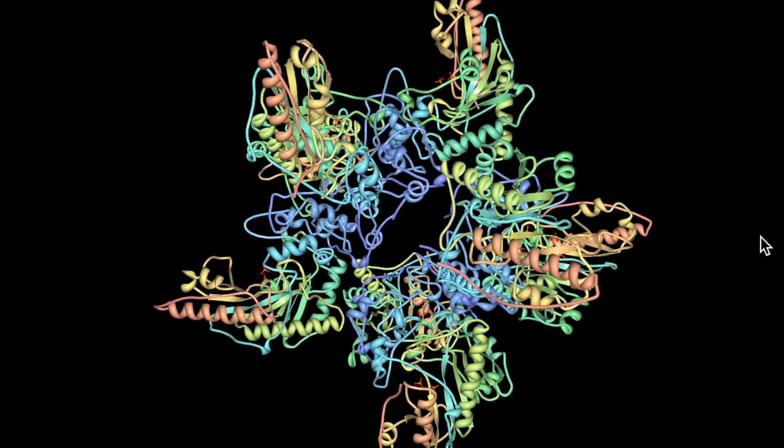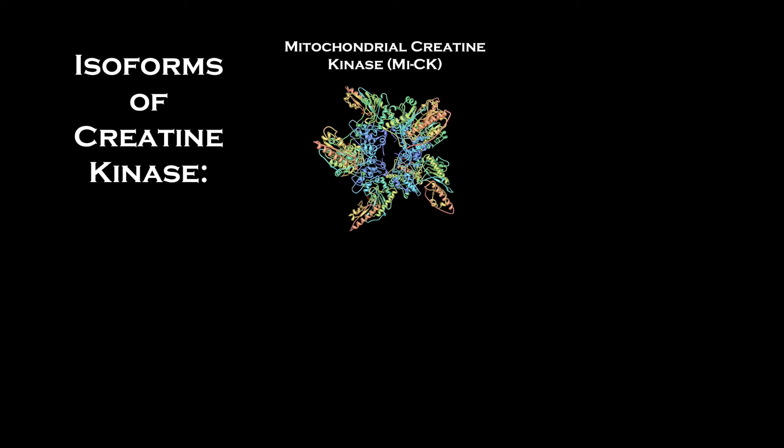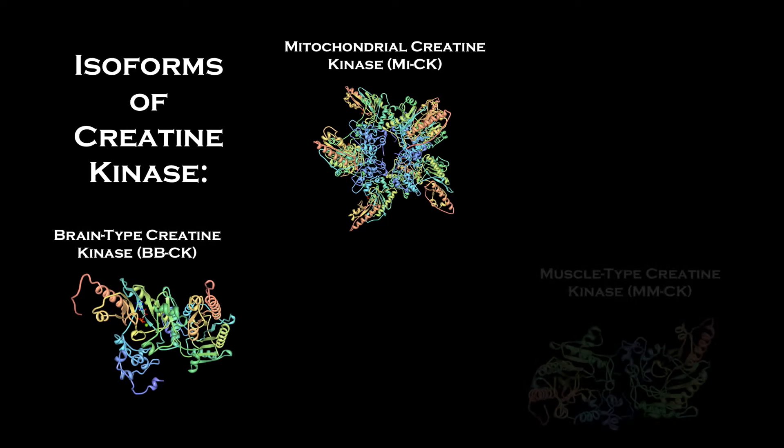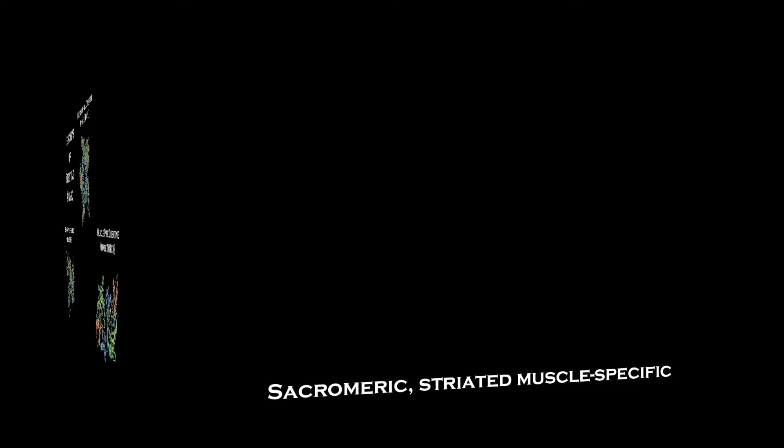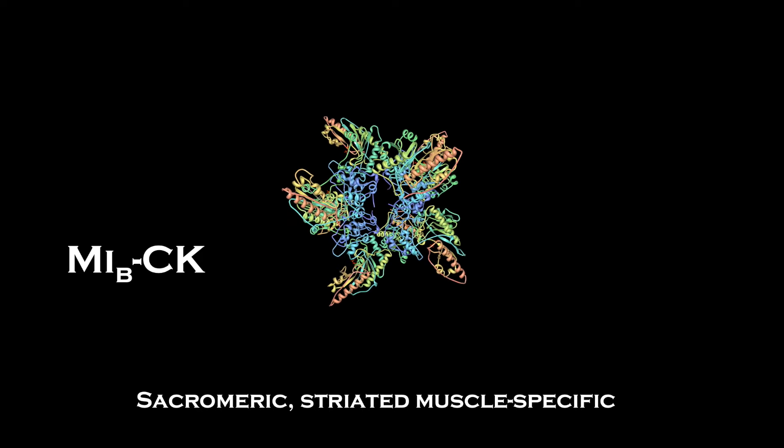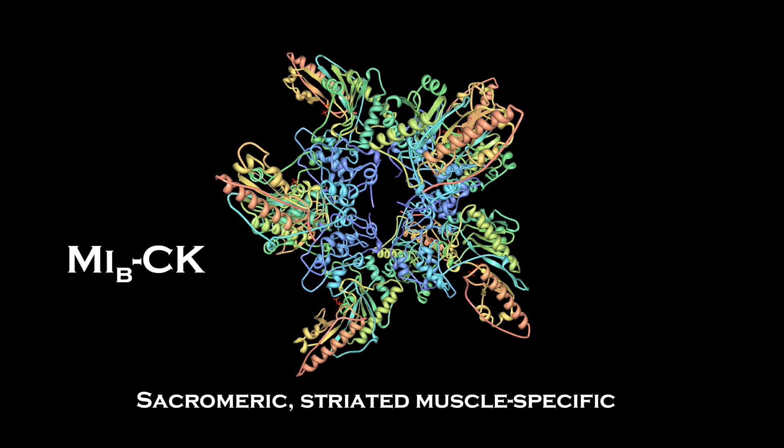Creatine kinase is one enzyme that plays a key role in maintaining cellular energy homeostasis. This works because creatine kinase has different isoforms that are compartmentalized in different places where energy is produced or utilized. Each isoform is responsible for maintaining the ATP-ADP ratio in that region. There are CK isoforms for mitochondria, brain tissue, and for differentiated sarcomeric muscle. Here, we will explore the mitochondrial creatine kinase, specifically the striated muscle creatine kinase in the mitochondria known as MiCK.